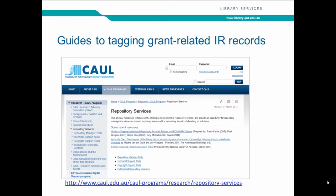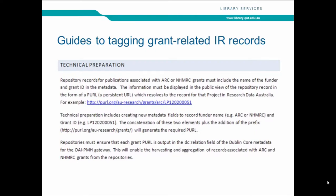Moving on to the guides to tagging grant-related records. The link to the CAUL guide is on the CAUL website. I'm not going to go through it in detail but will mention the main points. In technical preparation, we need to make sure the name of the funder and the grant ID is in the metadata and that it is output in the form of a PURL — a persistent URL — as shown in the example on screen. This is basically what it should look like on the repository record for an ARC grant.